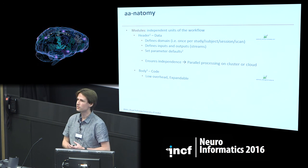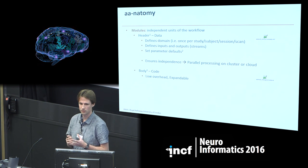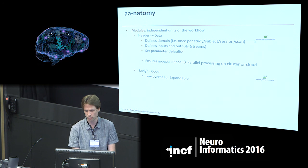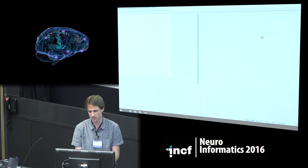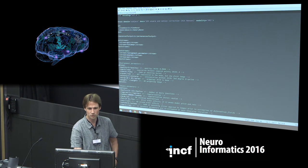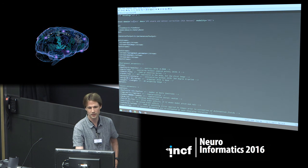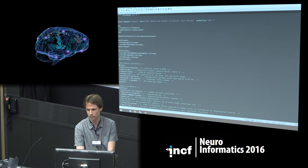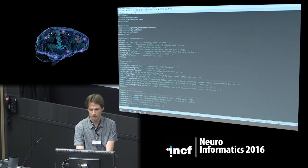The modules are the independent units of the workflow. Each contains a header which defines the domain — where the module is executed. For example, the realign-unwarp module works for every subject independently. It takes the EPI data and the field map as input and generates the realignment parameters and so on. There are parameter defaults which are loaded, but these can be customized in your user master script.